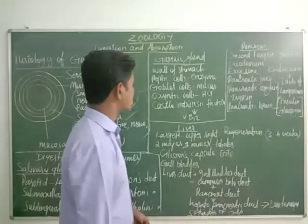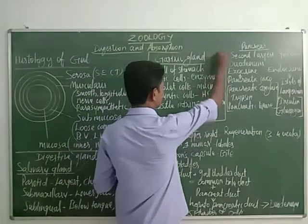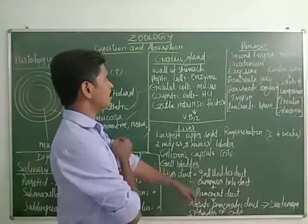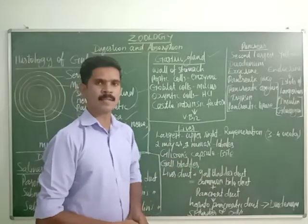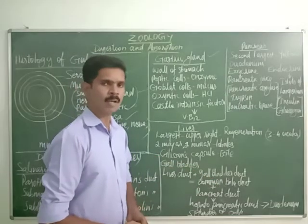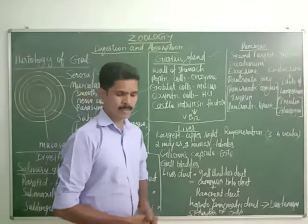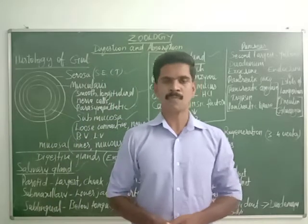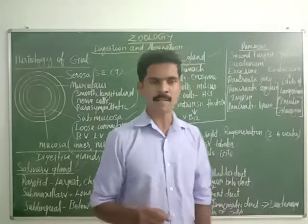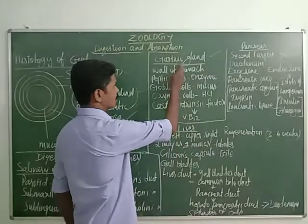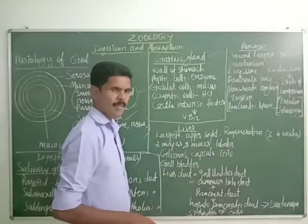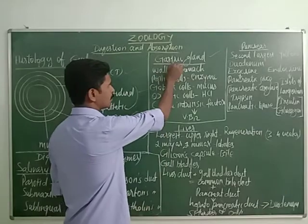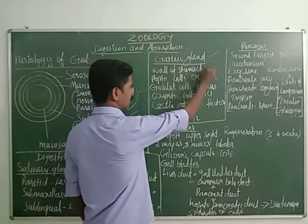Next we are going to study about the gastric gland. The gastric gland is located in the wall of the stomach. The inner wall of the stomach is lined with a special type of gland called the gastric gland.